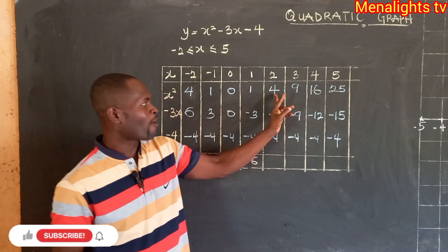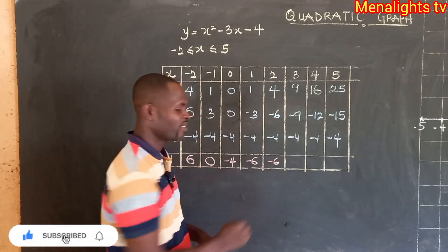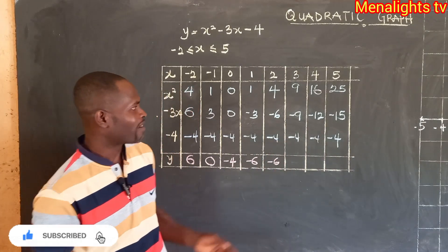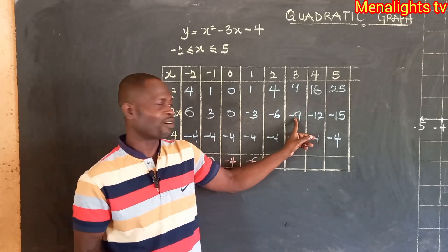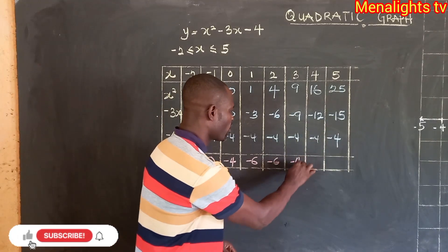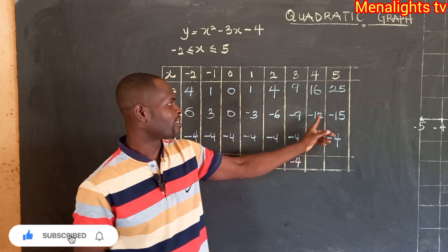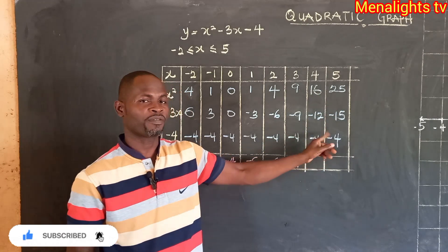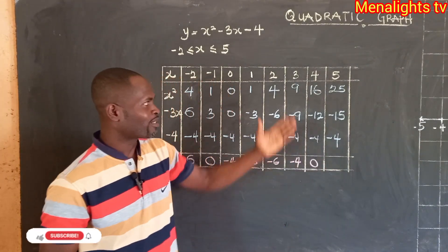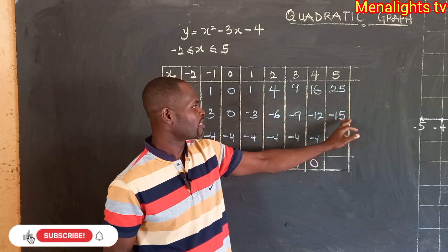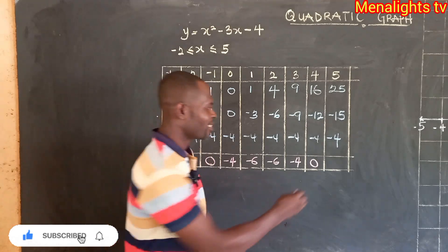For x equals 2: 4 minus 6 minus 4 gives negative 6. For x equals 3: 9 minus 9 minus 4 gives negative 4. For x equals 4: 16 minus 12 minus 4 gives 0. For x equals 5: 25 minus 15 is 10, and 10 minus 4 gives 6.